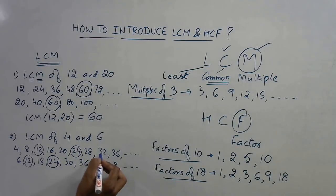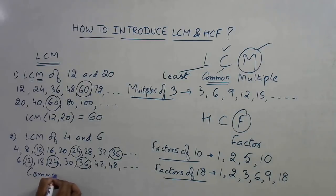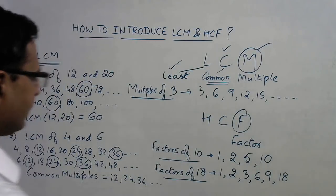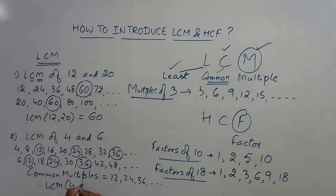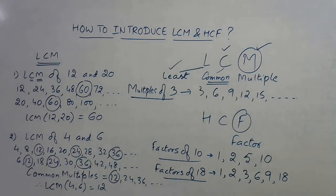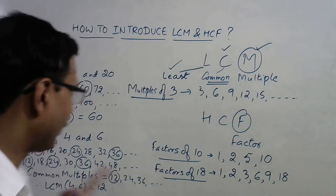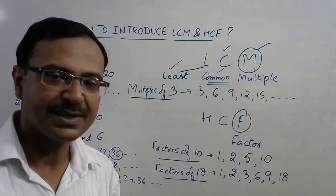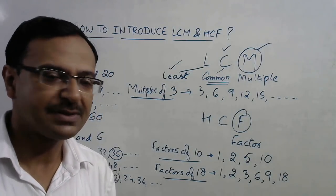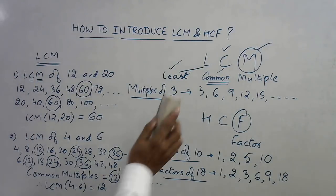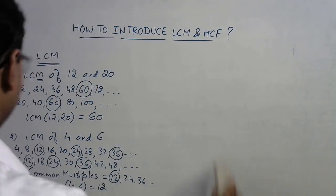Continuing the common multiples of 4 and 6: 24 is common, 36 is common, and there will be many more. The common multiples are 12, 24, 36, and so on. Now come to the word L — least — which means the smallest one. So the LCM of 4 and 6 is 12. If you teach students the meaning of the word LCM, they will understand why it is 12: because among the common multiples of 4 and 6, the smallest one is 12.